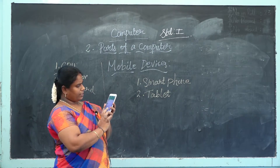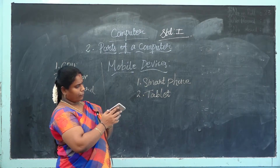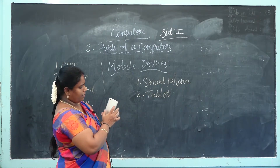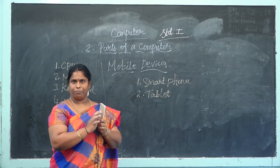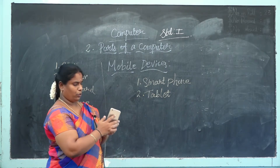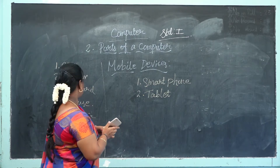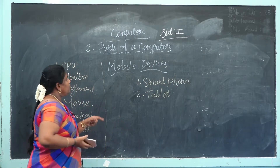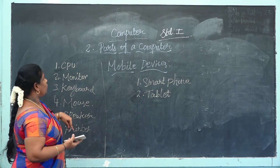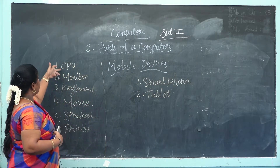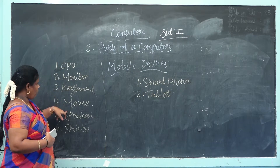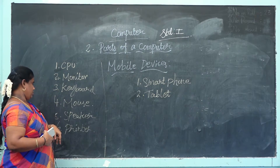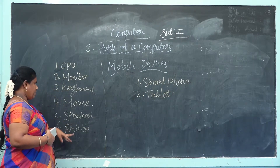Next one: in the back side, you will have the CPU. So, a smartphone has: CPU, monitor, keyboard, mouse, speaker, printer — all in one device.